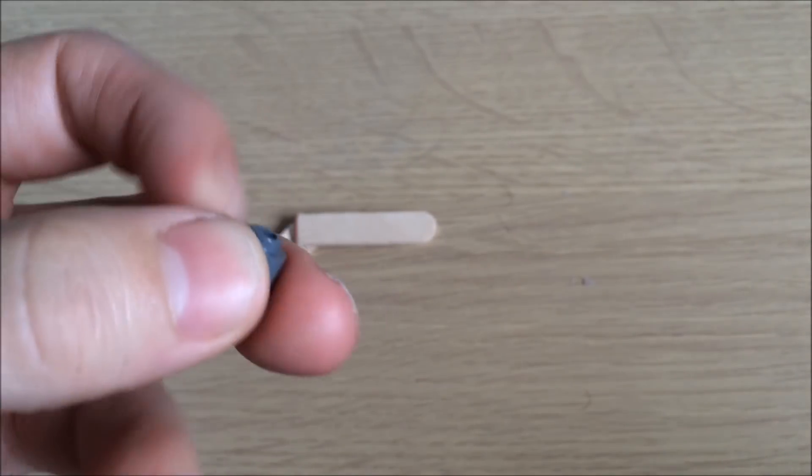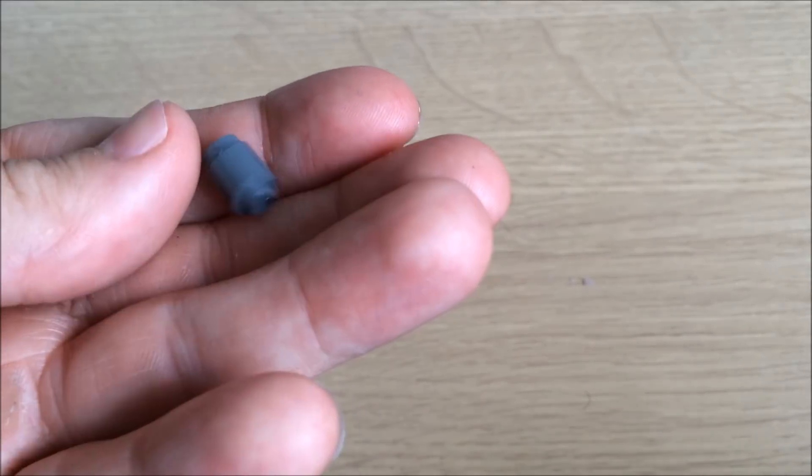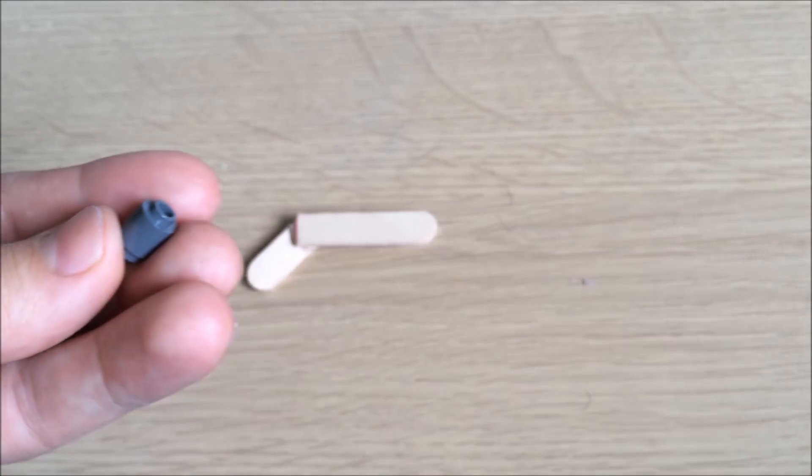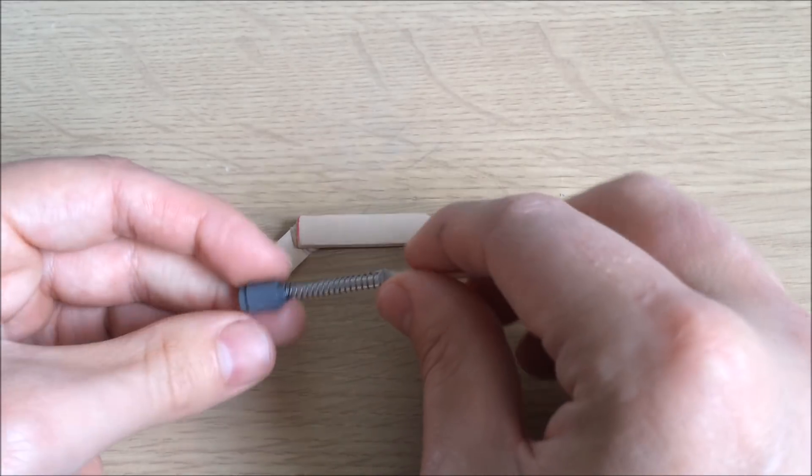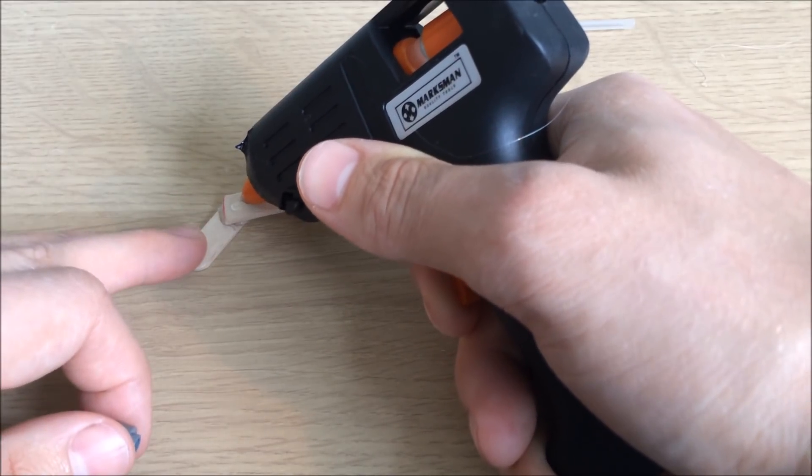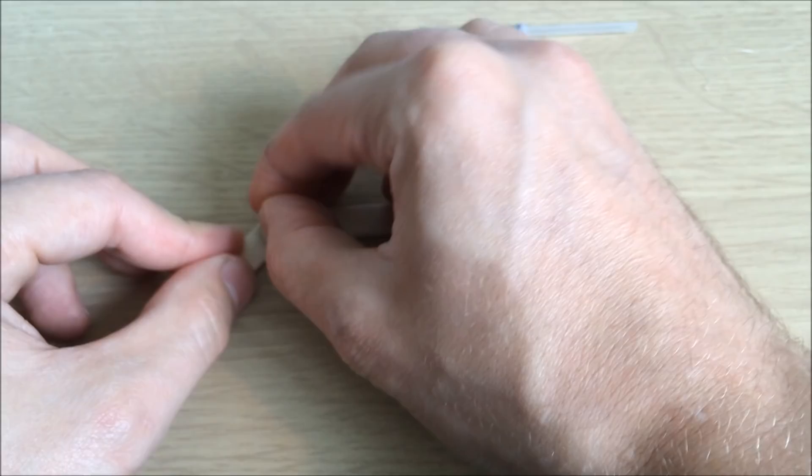Now you need to find something that's going to fit the tube through but support the spring. I managed to find a round piece of Lego that works perfect, allowing the spring to launch the tube. Stick this in place at the rear of the gun with more hot glue.